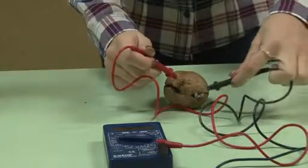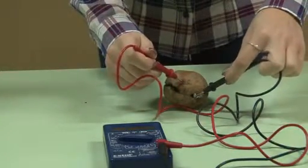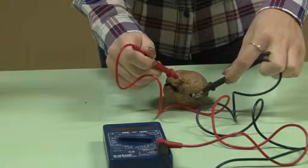A krumpli elem előállítása során a burgonyába helyezzük réz- és cinkrudakat, ahol a burgonya folyadéktartalma lesz az elektrolit, míg a két fémrúd lesz az elektróda.